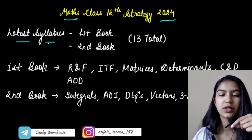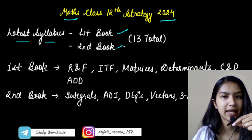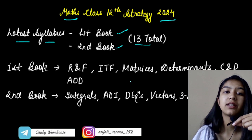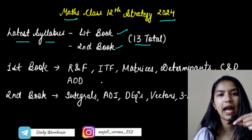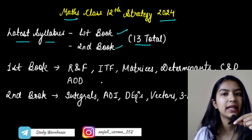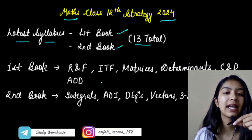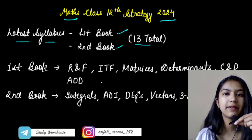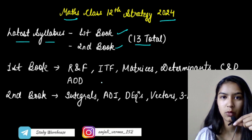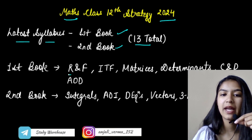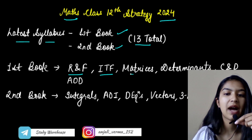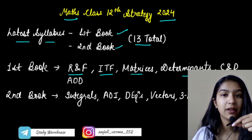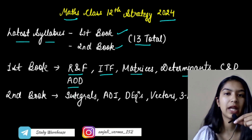Now we have two books — the first book and the second book. We have total 13 chapters. In the first book we have: Relations and Functions, Inverse Trigonometric Functions, Matrices, Determinants, Continuity and Differentiability, and Application of Derivatives.